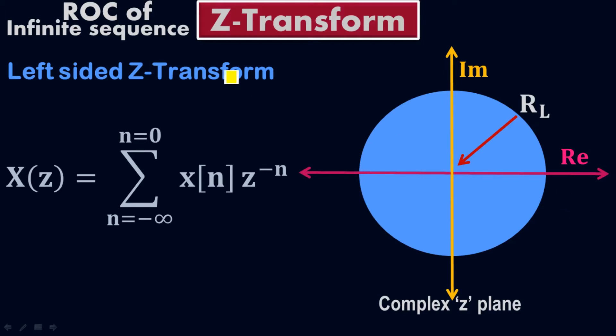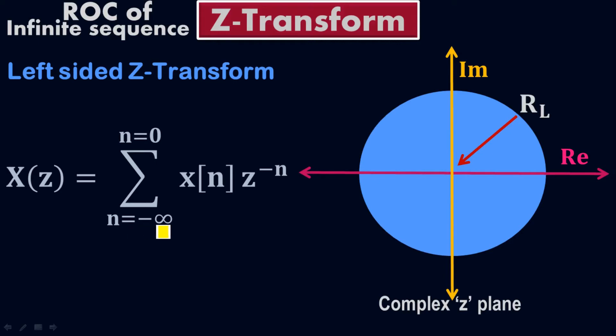The region of convergence for the Z-transform expands throughout the entire complex plane. It depends on what type of Z-transform you have — for the left-sided type, we have a different region of convergence than for the right-sided type. The bottom line is that you cannot limit it to just the negative half-plane, even though n goes from negative infinity up to 0.